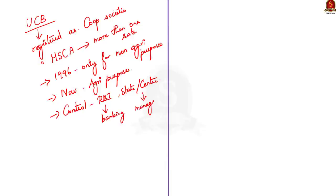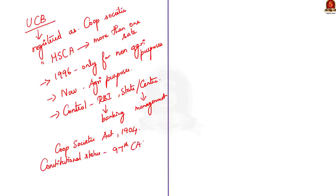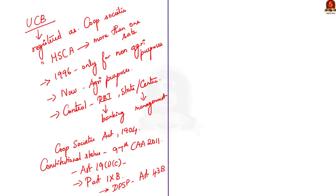Cooperative banks enjoy duality of control by the RBI and by the respective State Government or Central Government. Banking-related functions are regulated by RBI, and management-related functions are regulated by the respective State or Central Government. Some important points from a prelims perspective: cooperative structures came into existence formally after the passing of the Cooperative Societies Act in 1904. Cooperative societies were given constitutional status and protection by the 97th Constitutional Amendment Act of 2011, which made the right to form cooperative societies a fundamental right under Article 19(1)(c). This amendment also added Part 9B to the Constitution and a new Directive Principle of State Policy under Article 43B, requiring the state to promote voluntary formation, autonomous functioning, democratic control, and professional management of cooperative societies.